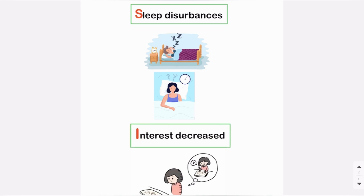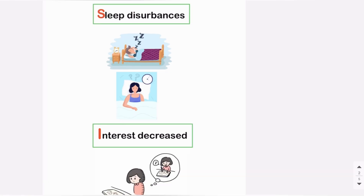I for interest decreased. Patients with depression have low interest. For example, a person will have no interest in watching a television show that he used to love the most.